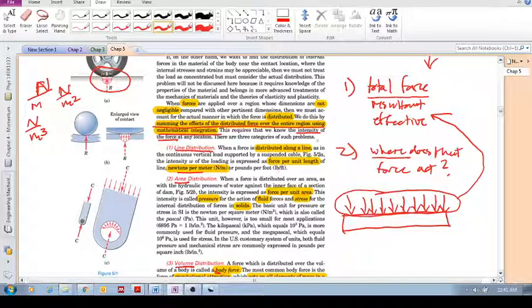If we've got a line distribution, an example is like you've got a cable. The force doesn't act at one specific place - the gravitational force is distributed over the entire cable. A line intensity is given by Newton per meter. We've got force per unit length given by Newton per meter.